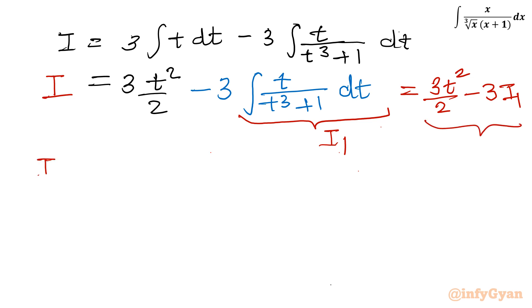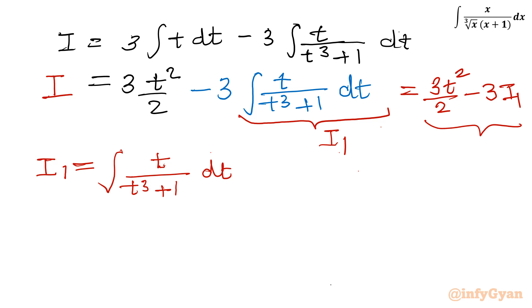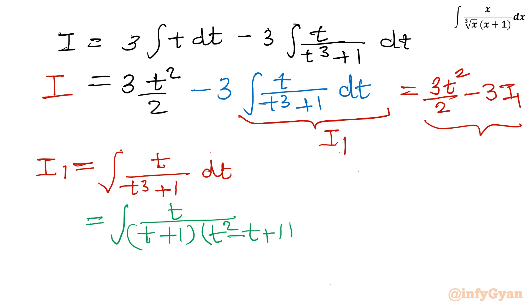So let us write I₁ equal to the integration of t over (t cubed plus 1) dt. Now I will apply the formula for a cubed plus b cubed in the denominator. So I can write the integration of t over (t plus 1)(t squared minus t plus 1) dt.